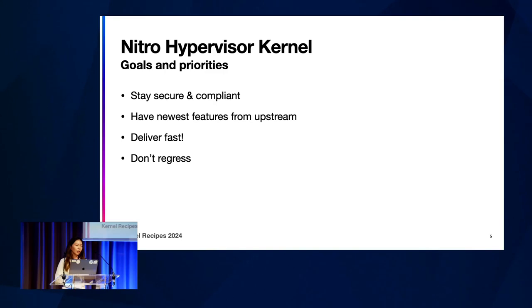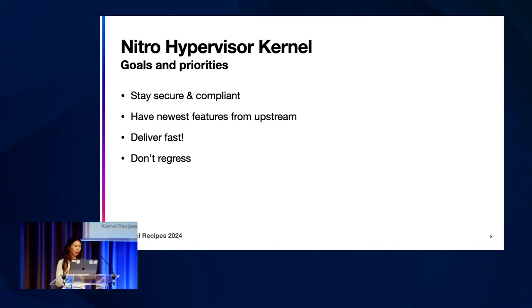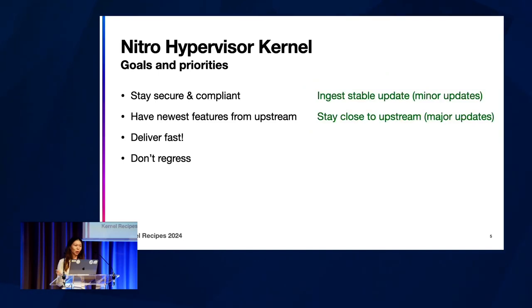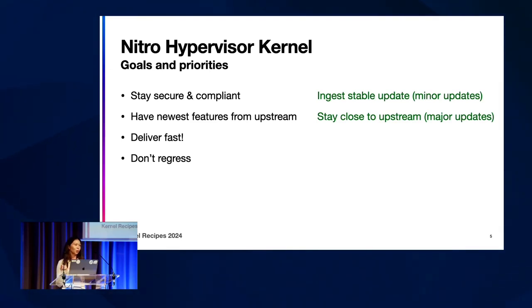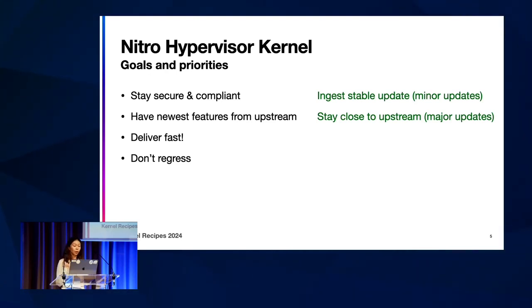Our priorities are: staying secure — a lot of our customers also care about staying compliant — having the newest features from upstream, and doing all of that really fast without regressions. To stay compliant, we ingest all stable updates; any minor releases for the kernel version we're running on, we ingest as soon as possible. For newest features, we want to do major kernel upgrades, and we pick long-term stable kernels.